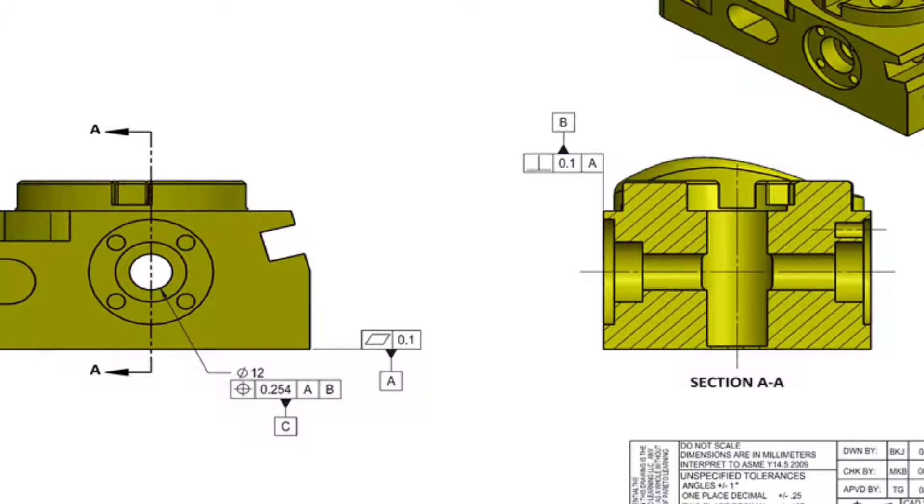Javier will start off by creating datum A and qualifying datum feature A. The reason that he is starting here is not simply because of alphabetical order. Looking at the drawing, we can see that it is the primary datum. The ASME Y14.5 standard states that we do not have to label our datums in alphabetical order, but we highly recommend that you do. But how did Javier know that he needed to set up datum A first? Well, the datum reference frames contained within the feature control frames that are qualifying datum features B and C dictate that. Note that the perpendicularity requirement for datum feature B is referenced back to A, and in that datum reference frame, the primary datum is A.